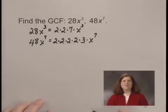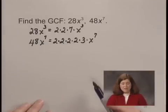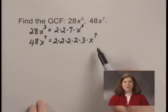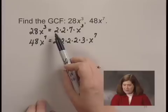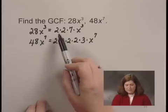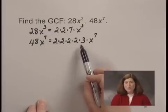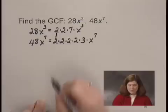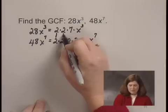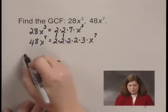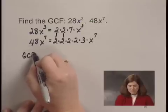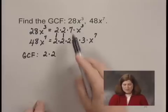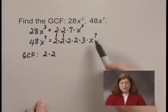Now once these are written in this form, we can find the greatest common factor by looking separately at the 28 and 48 part, and then at the variable part. Looking at the coefficients, we see that 28 and 48 both have 2 factors of 2. This pair of 2s is in common, and this pair is in common, so the greatest common factor is going to have 2 factors of 2. Nothing else is in common, so we can look at the variable part.